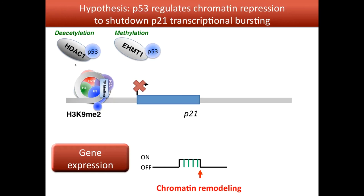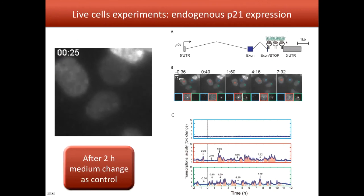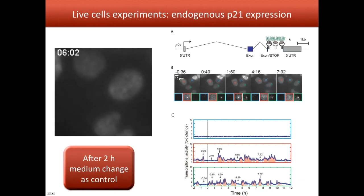To study this effect, we need tools to work at the single-cell level — we need to be able to see p21 at the single-cell and single-locus level to avoid any averaging effect from different cells or loci. To do that, working in the Rosbash lab, I introduced 24 MS2 stem loops at the beginning of the 3' UTR of the p21 endogenous gene using CRISPR-Cas9. I now have a cell line where one allele is labeled with 24 MS2 repeats.